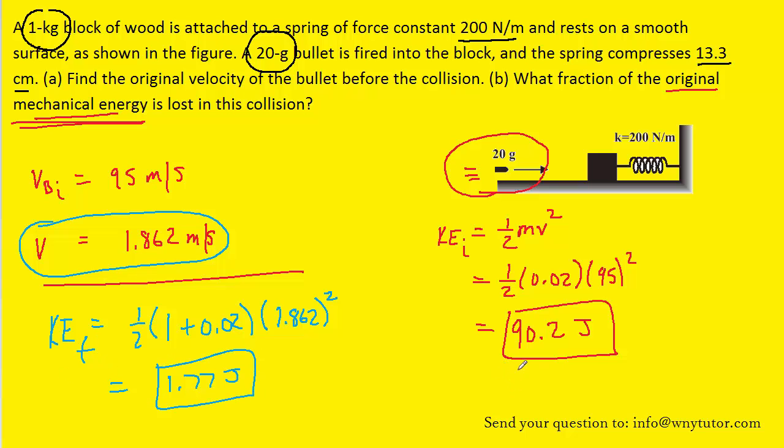So think about that. Before the collision, there was 90.2 joules worth of mechanical energy. And then after the collision, there was 1.77 joules worth of mechanical energy. Ask yourself how much was actually lost in the collision. Well, that's a simple matter, right? We just have to subtract 90.2 minus 1.77. And we get roughly 88.43 joules was lost in that collision.